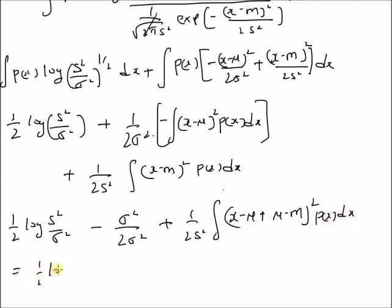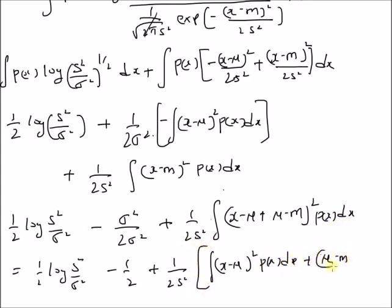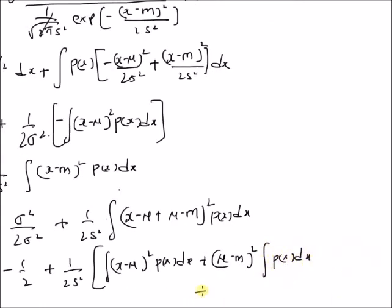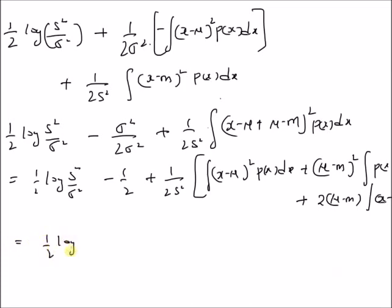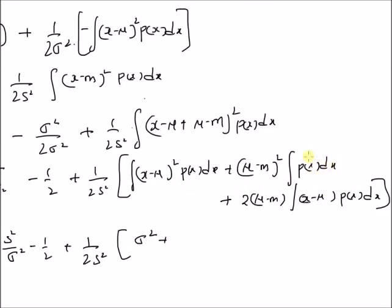This is equal to 1 by 2 logarithm of s square by sigma square, minus 1 by 2, plus 1 by 2 s square. The first term is the integral of x minus mu whole square times P of x dx, which equals sigma square — the definition of variance of the random variable x with probability distribution P of x. The second term: this integral is 1, so we have mu minus m whole square. The third term is 2 times mu minus m whole square. And the cross term integral is basically 0 since this is x minus mu, and we are left with this term.